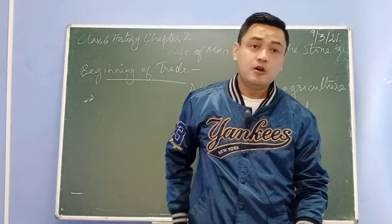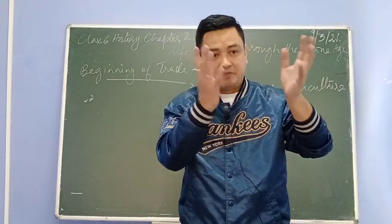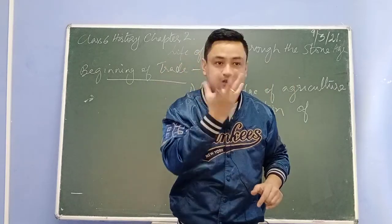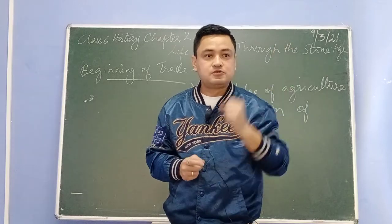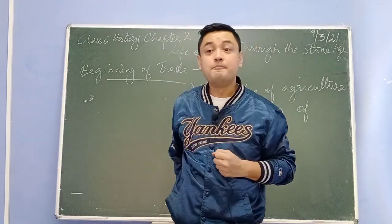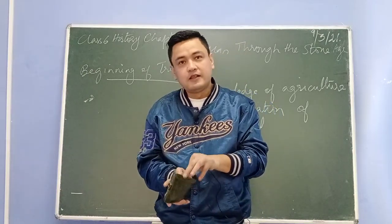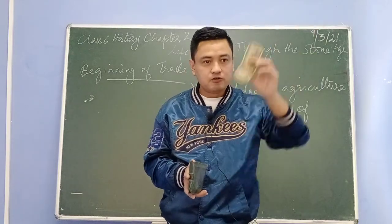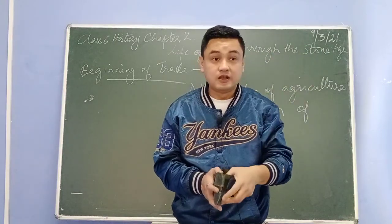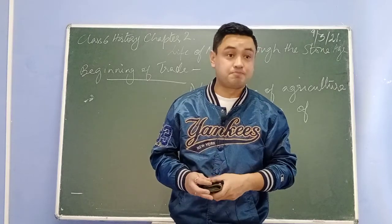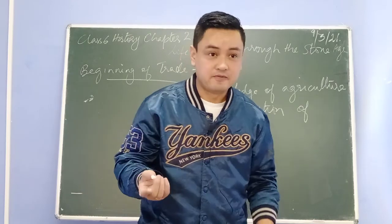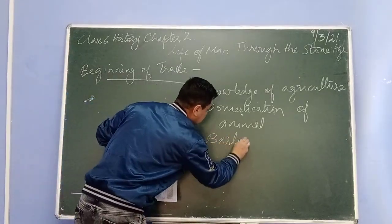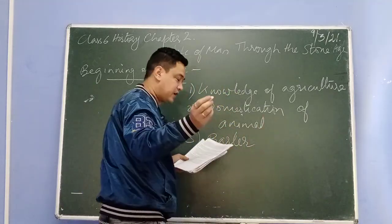However, early man used an old method of exchange called the barter system. Today if you want to buy vegetables, clothes, shoes, or anything in the market, you give money — paper currency. You exchange things for money. But in olden times in the Neolithic age, Neolithic man exchanged his product with another man by exchanging the thing he did not have. This old method is called the barter system, or barter trade — underline that in your book.